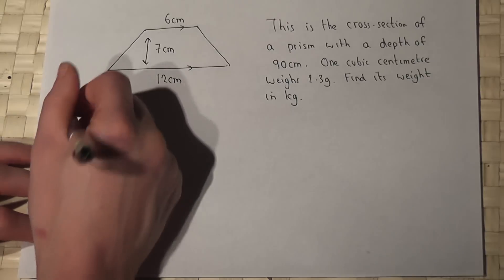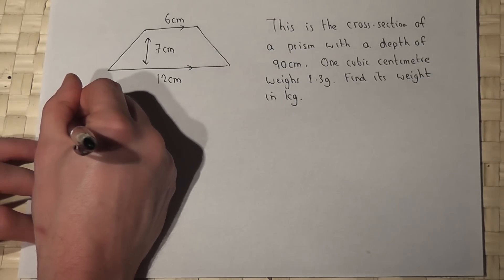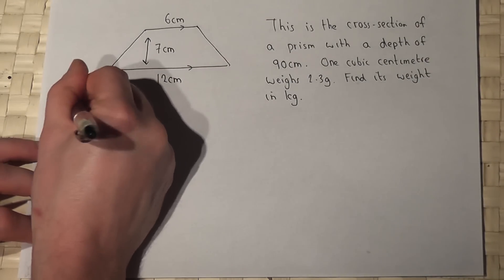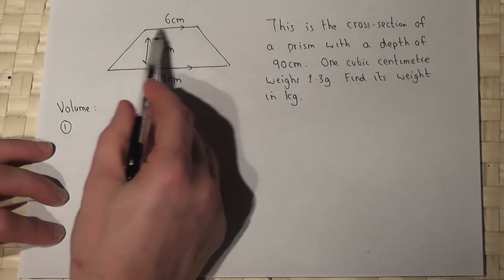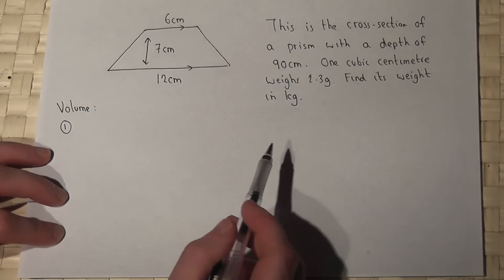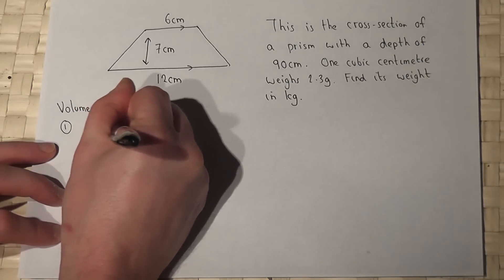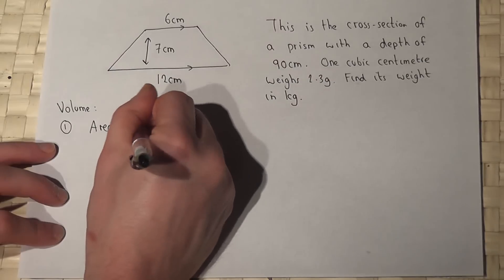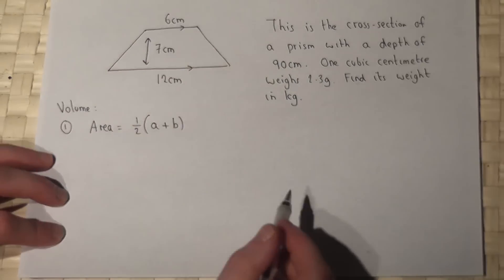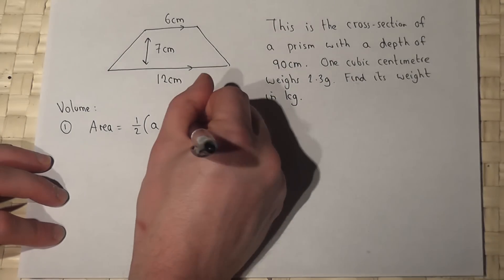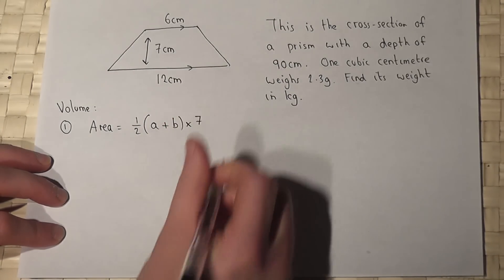To do this we first find the volume. To find the volume we begin by finding the area of the cross section. For a trapezium the area is a half the sum of the two parallel sides times by the distance between those two sides.